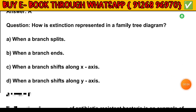Question number 13. How is extinction represented in a family tree diagram? Option A — When a branch splits. Option B — When a branch ends. Option C — When a branch shifts along the X axis. Option D — When a branch shifts along the Y axis. The answer is Option B: When a branch ends.